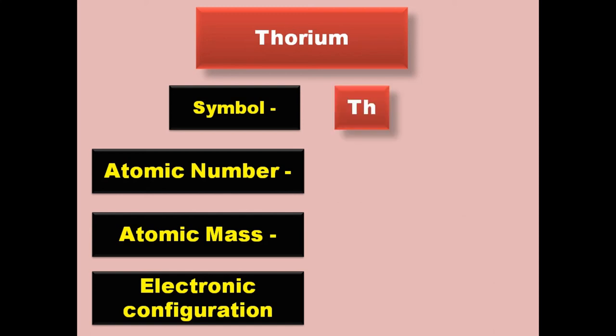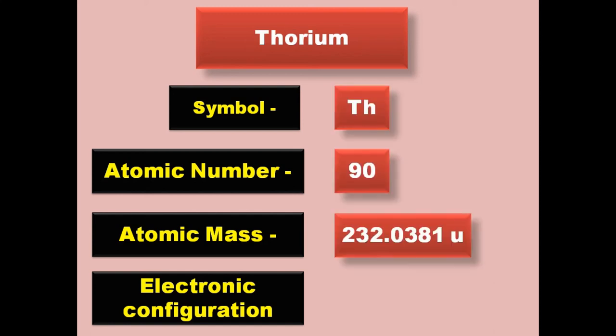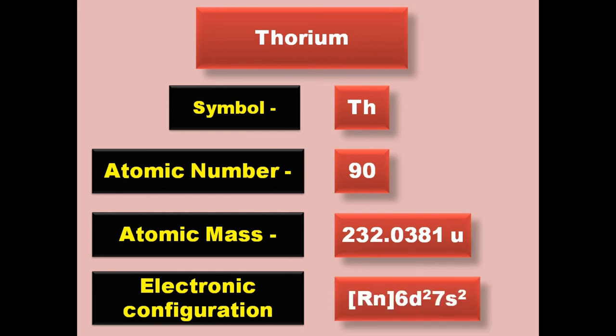Thorium has symbol Th, atomic number 90, atomic mass 232.0381, electronic configuration [Rn] 6d2 7s2. Thorium is an actinide and exists in solid form at room temperature.